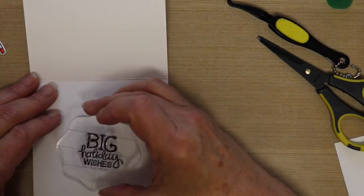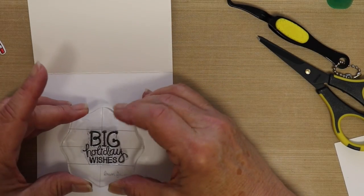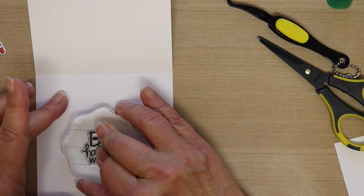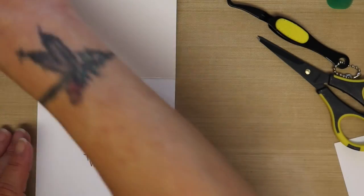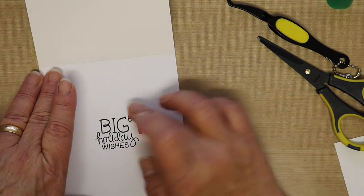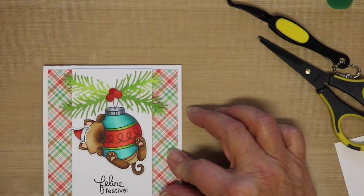And so for the inside, I'm going to use the Big Holiday Wishes. And I'm going to stamp that with some VersaFine Onyx Black ink. And then the little candy cane that I colored, I am going to use some glue dots and put that down right beside the sentiment.